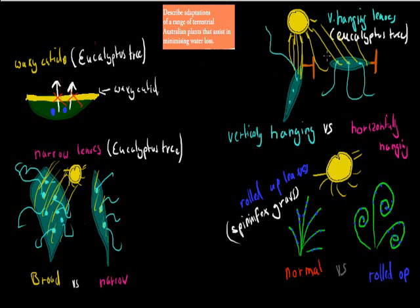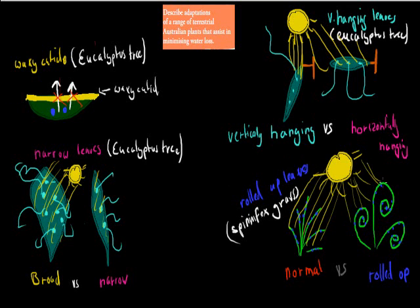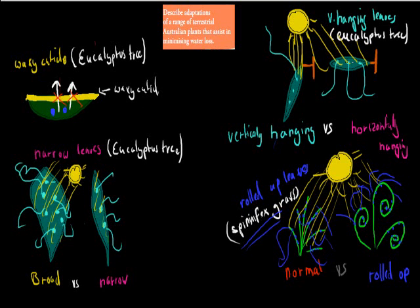Another adaptation is the spinifex grass, which can roll up its leaves during really sunny and hot times. When leaves are not rolled up, the sun hits them completely and each part evaporates. Whereas if they're rolled up, only the exposed parts have evaporation — the parts that are rolled up have no evaporation happening. So remember the adaptations: eucalyptus trees have waxy cuticles, narrow leaves, and vertically hanging leaves. The spinifex grass has rolled-up leaves. Remember the names of the plants as well as the adaptations — just make sure you remember a couple.